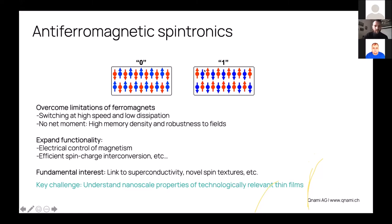The interest is to overcome some limitations in ferromagnets. You can switch those types of bits at faster rates, up to the terahertz range. Because you have no net moments, you can increase the memory density with no problem of cross talks between the bits. Also, it's robust to external fields, which some of you might know is one of the challenges the MRAM is facing now as it's entering production. You can also think of expanding functionality, as for example controlling fully electrically the magnetic textures. One of the key challenges to move these type of materials further is to understand their properties at the nanoscale, in particular as we start and grow thinner and thinner films.